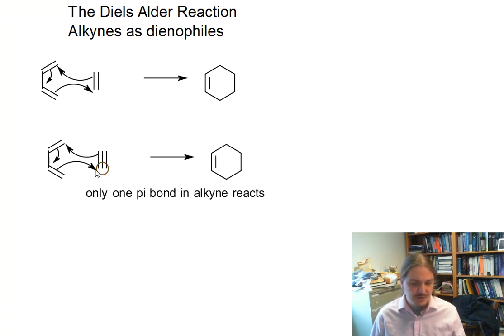We're drawing one arrow to one end in the alkyne. We're drawing another arrow from one of the pi bonds. The other pi bond stays there, which means that the product of this reaction is a cyclohexane with two alkenes in it.